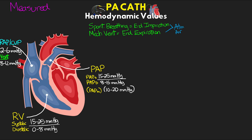And then finally with our PA cath, we have the wedge pressure — whether we're calling this the pulmonary capillary wedge pressure, the pulmonary artery wedge pressure, or the pulmonary artery occlusive pressure. Like the right atrial pressure CVP, this is just going to be a single value, and here our normal value is 6 to 12 millimeters of mercury.